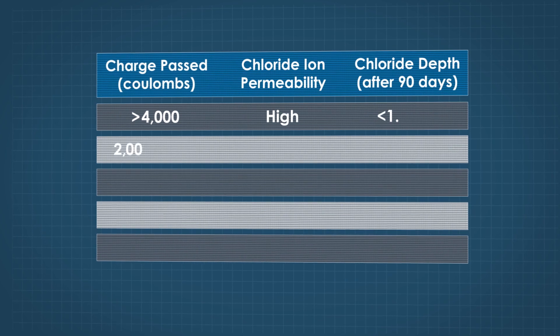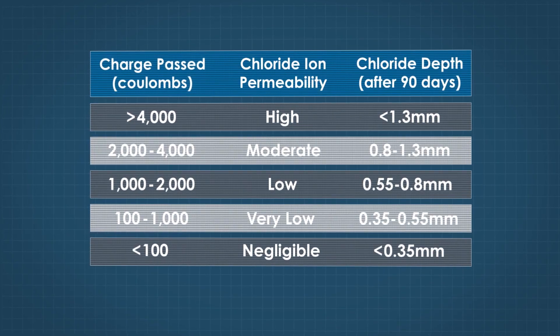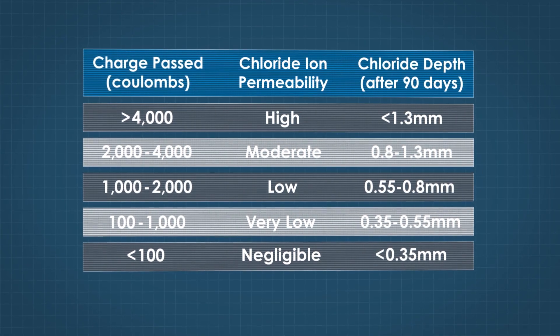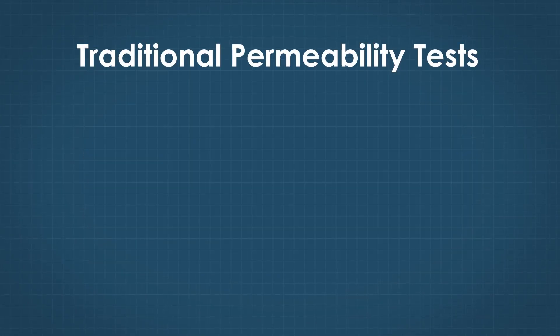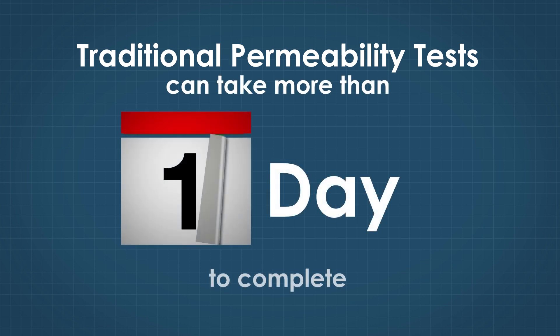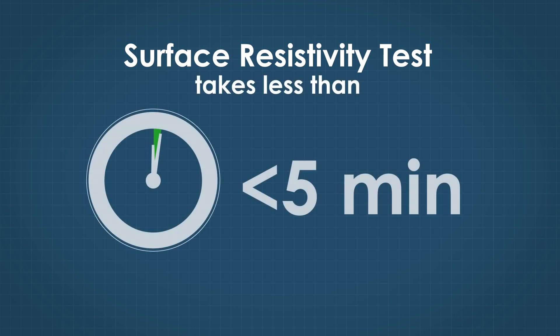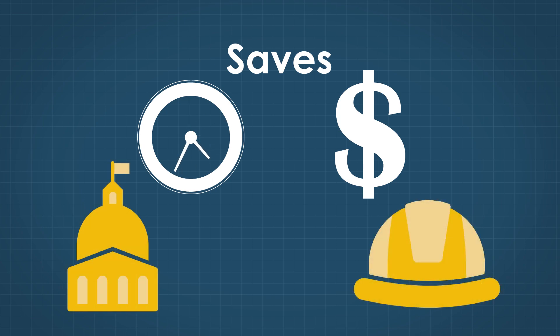A pre-established relationship between surface resistivity and the rapid chloride permeability test is used to determine permeability. Traditional permeability tests can take more than two days to complete, but the surface resistivity test takes less than five minutes, which saves time and money for agencies and contractors. This test can be run on everyday samples to check mix consistency, whereas the labor-intensive rapid chloride test made that impractical.